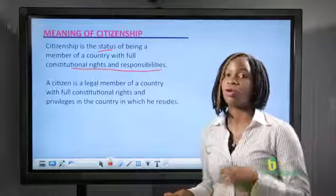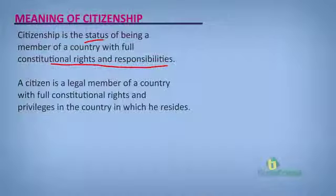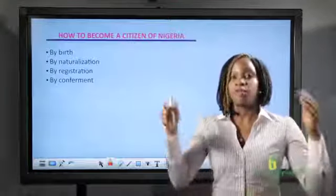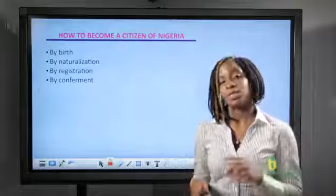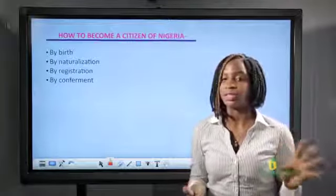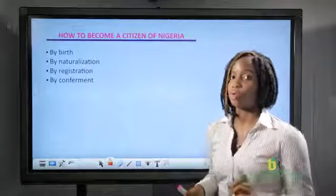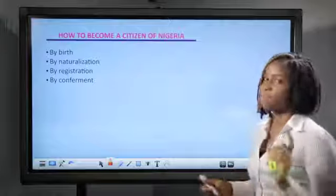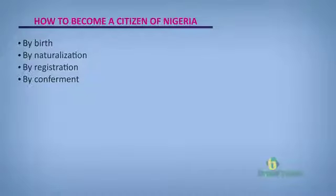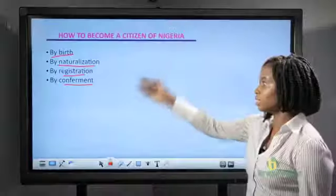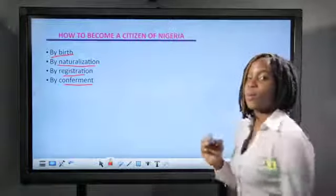Which he or she is to fulfill or give to their country. Now we're going to look at how to become a citizen of Nigeria. Remember, we said every country has a different policy on how people become citizens. But we'll be looking at the policies which Nigeria uses to make people citizens. The first way through which a person can become a citizen of Nigeria is by birth. The second by naturalization, third by registration, and by confirmation. We'll be looking at these different ways individually.